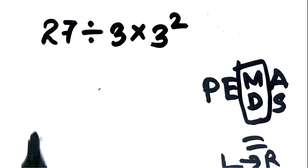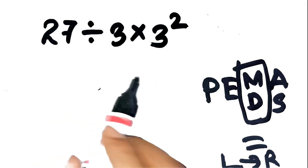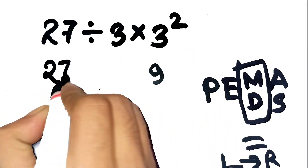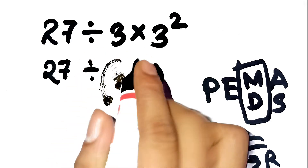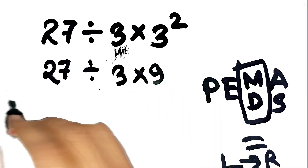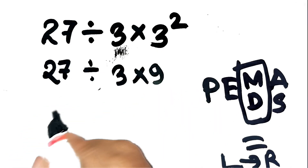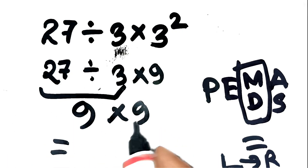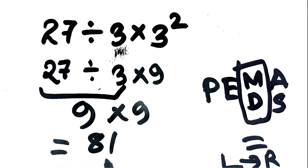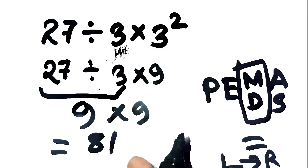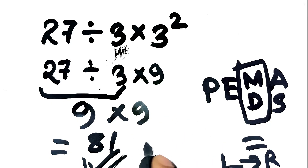Let's follow the proper order. First, the exponent: 3 squared equals 9. So our expression becomes 27 divided by 3 times 9. No shortcuts, no skipping — we move left to right. Start with 27 divided by 3, which gives us 9. Now it's 9 times 9, and 9 times 9 is 81. Nothing fancy, nothing hidden — just the actual rule that division and multiplication must be done in the order they appear. So the correct answer is 81, not 1.